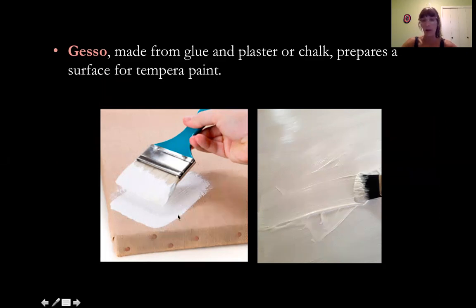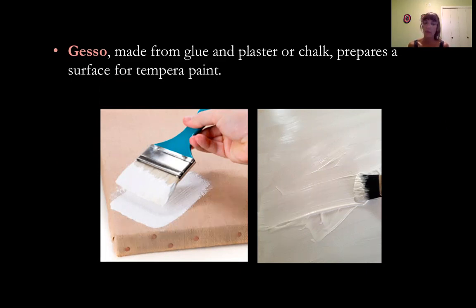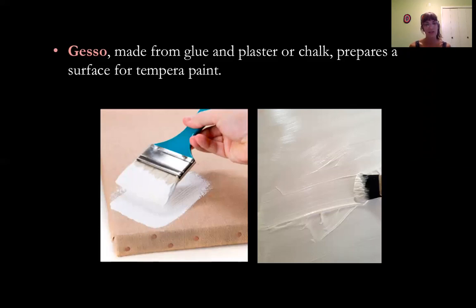Gesso is made from glue and plaster or chalk, so it has this white materiality to it. It looks like white paint, but the reason for this is because canvas — a stretched canvas — is absorbent. It's basically like a thick type of cloth, so of course it would absorb paint. So that it doesn't absorb the paint, artists use gesso, this primer, to prime their paintings. There's a thin layer of this white plaster chalk glue material, and then of course that is what the paint will sit on.